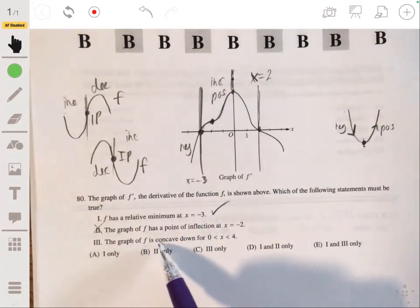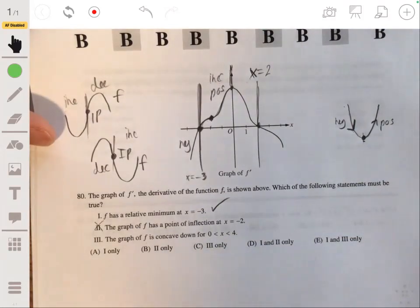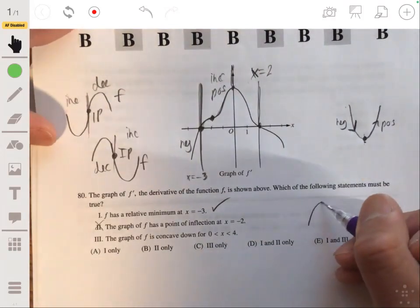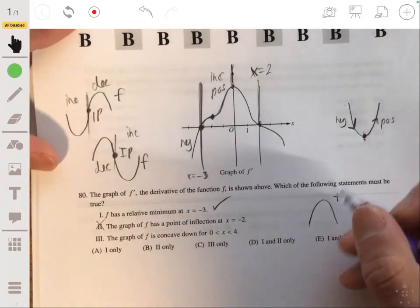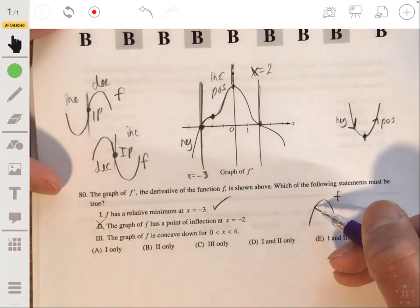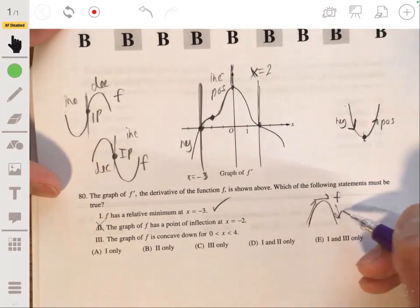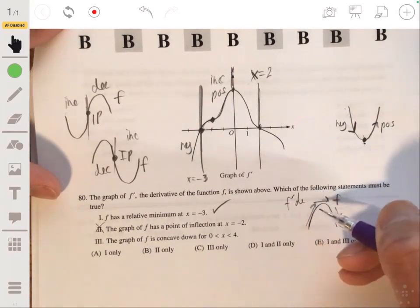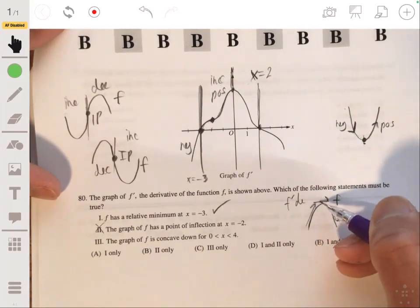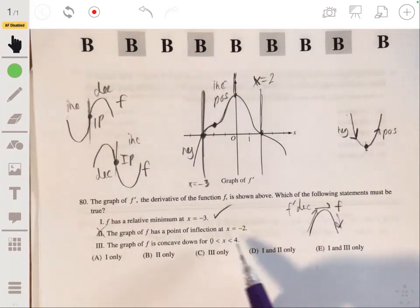Statement three, the graph of f is concave down for x between 0 and 4. So remember our graph is concave down, we have something looking like this. And how this relates from the derivative is that the derivative, say if these are tangent lines, the derivative f prime is decreasing. See, it's going from positive to 0 to negative. So we want to see if it's decreasing on this interval.